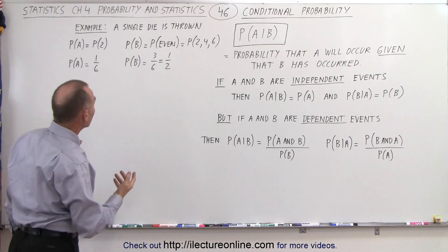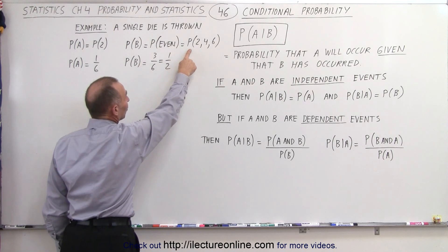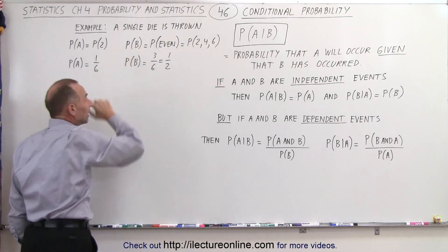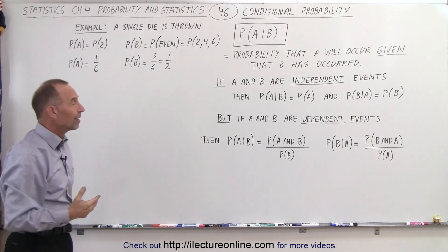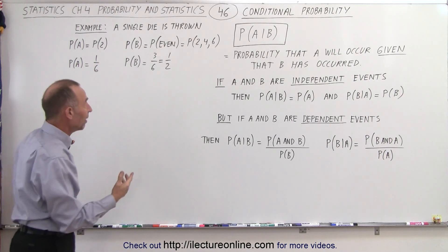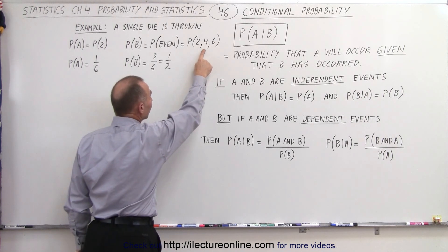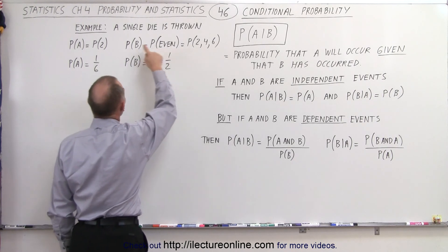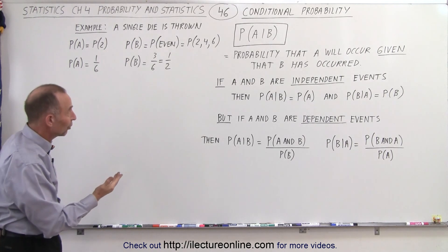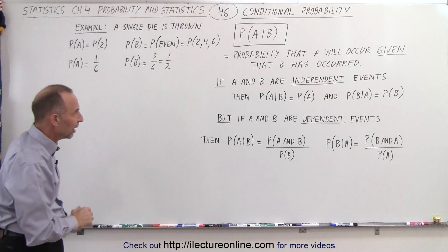For example, if we throw a die and we know that the number is odd, then there's no way we're going to have a 2 at the same time — so there's zero probability of getting a 2. However, if we know that the number we throw is even, then there's a one-third probability that we'll get a 2, because 2 is only one of the three possible even numbers.